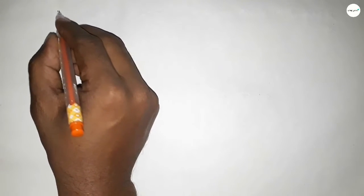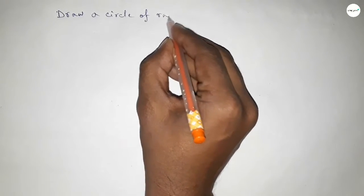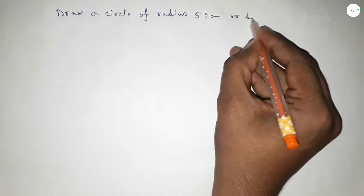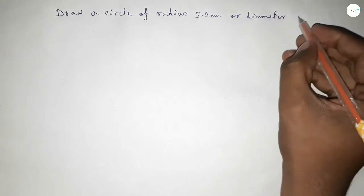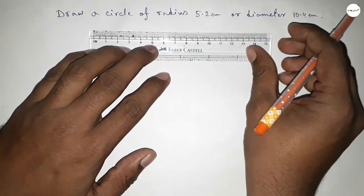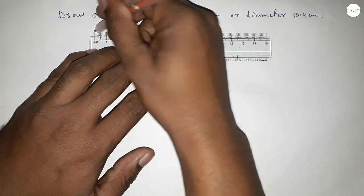Hi everyone, welcome to SSR Classes. Today in this video, we have to draw a circle of radius 5.2 centimeters or diameter 10.2 centimeters. Let's start the video. First of all, drawing the radius of 5.2 centimeters.